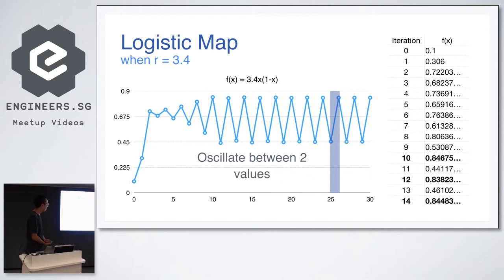Let's increase r to 3.4. And now you have a slightly more interesting pattern. It's oscillating between two values. It doesn't settle on a single value, but it's oscillating between two values. If you ask me whether this is predictable, I would say yes, it's predictable. Because if you ask me 1,000 iterations, I'd probably say one of those two values.